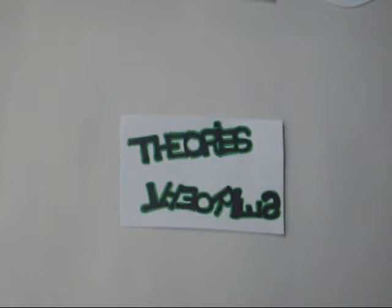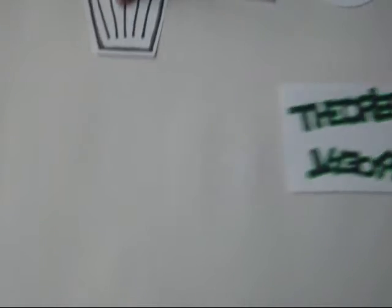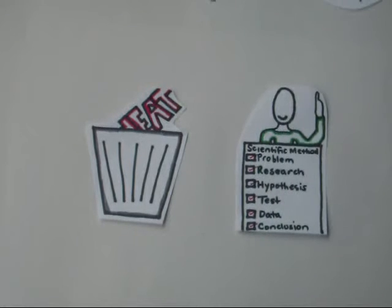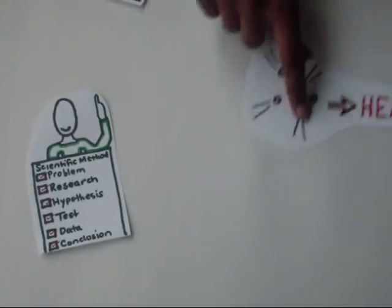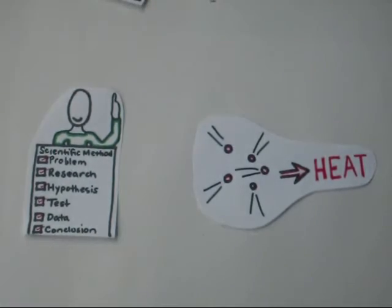You already know that theories change when new discoveries happen that challenge old ideas. So the old heat theory went out the door when Count Rumford challenged it. What did he do? He conducted tests using the good ol' scientific method. From his test, he concluded that motion of particles produced the heat.